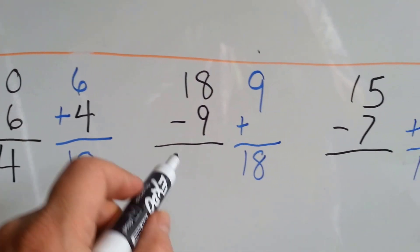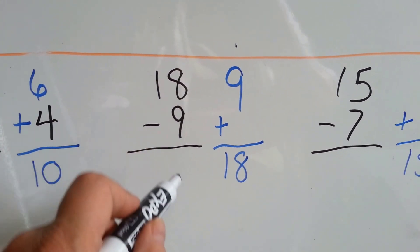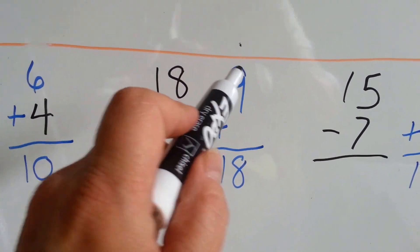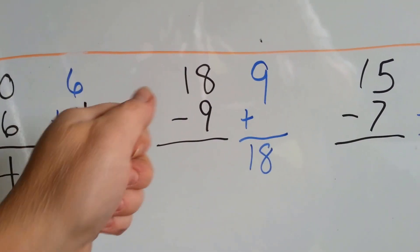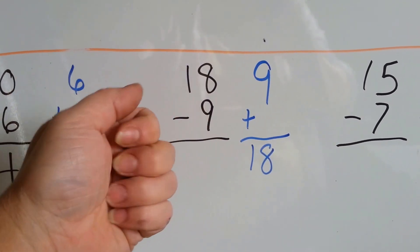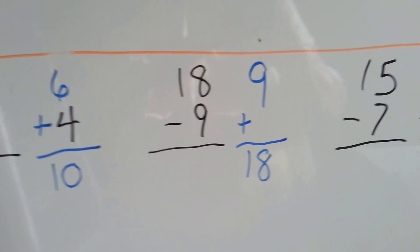Let's try this one: 18 take away 9. Well, 9 plus something is equal to 18. 9, shake it out, 9. 10, 11, 12, 13, 14, 15, 16, 17, 18. That was another 9.